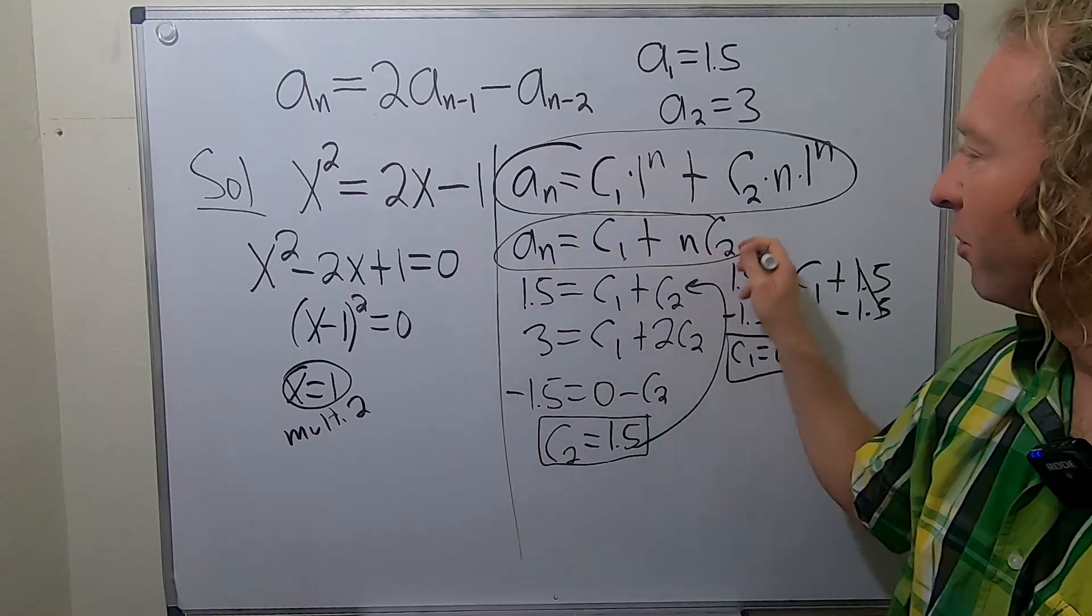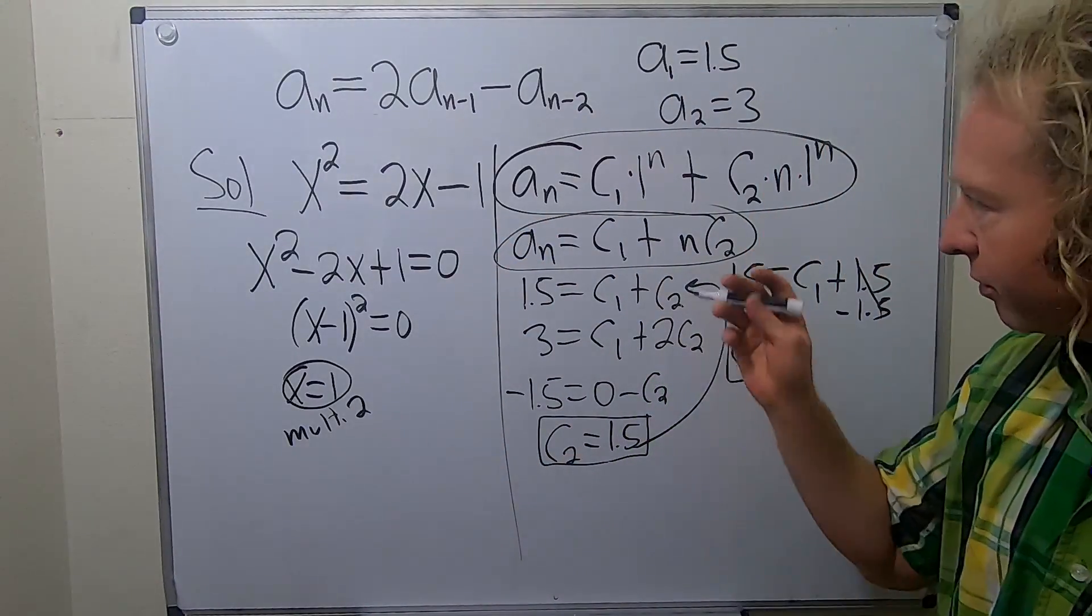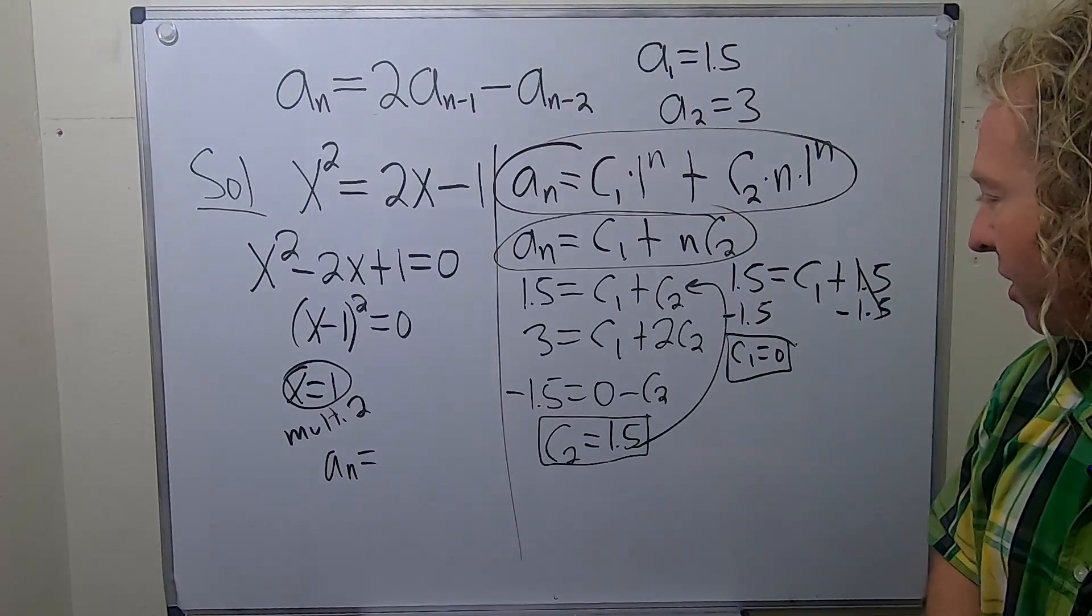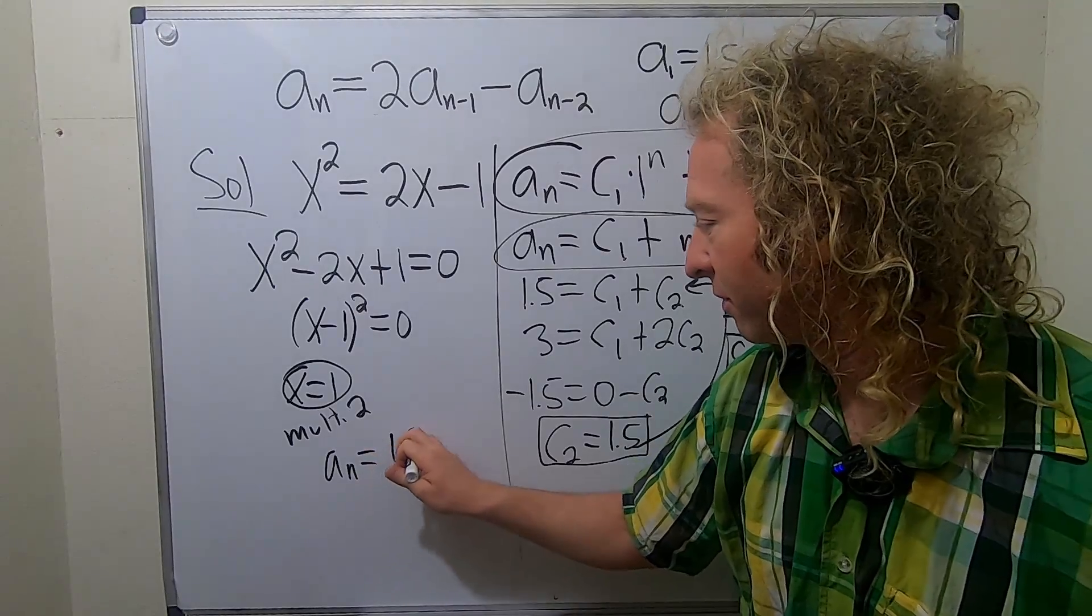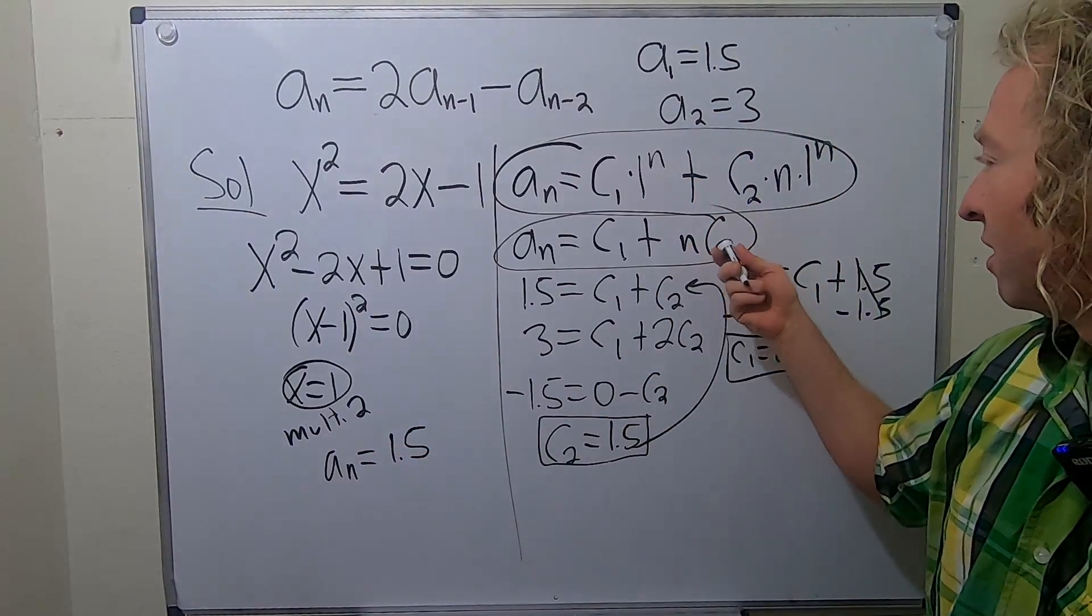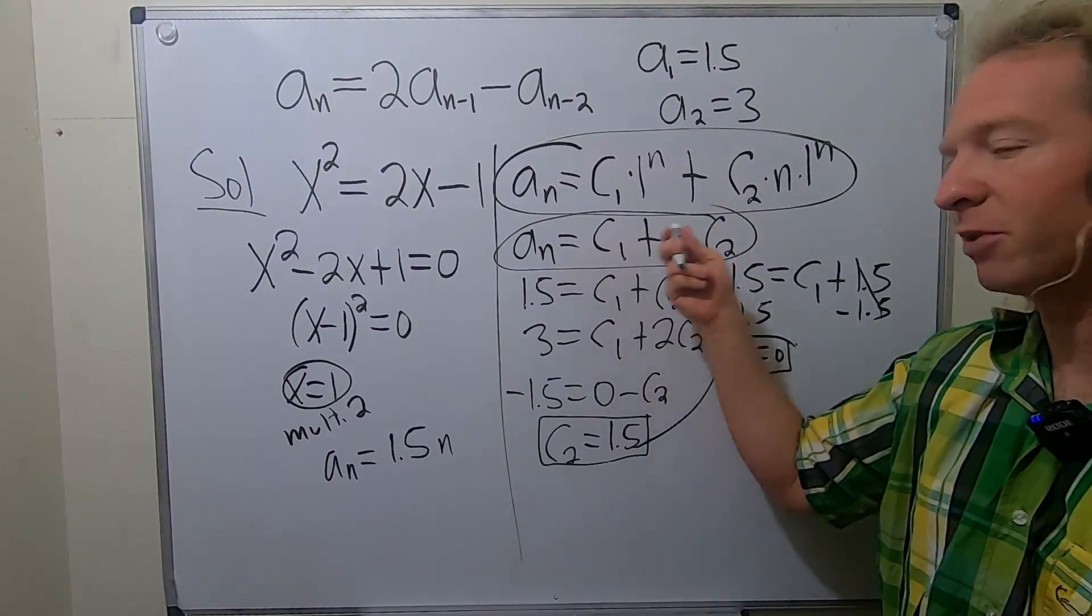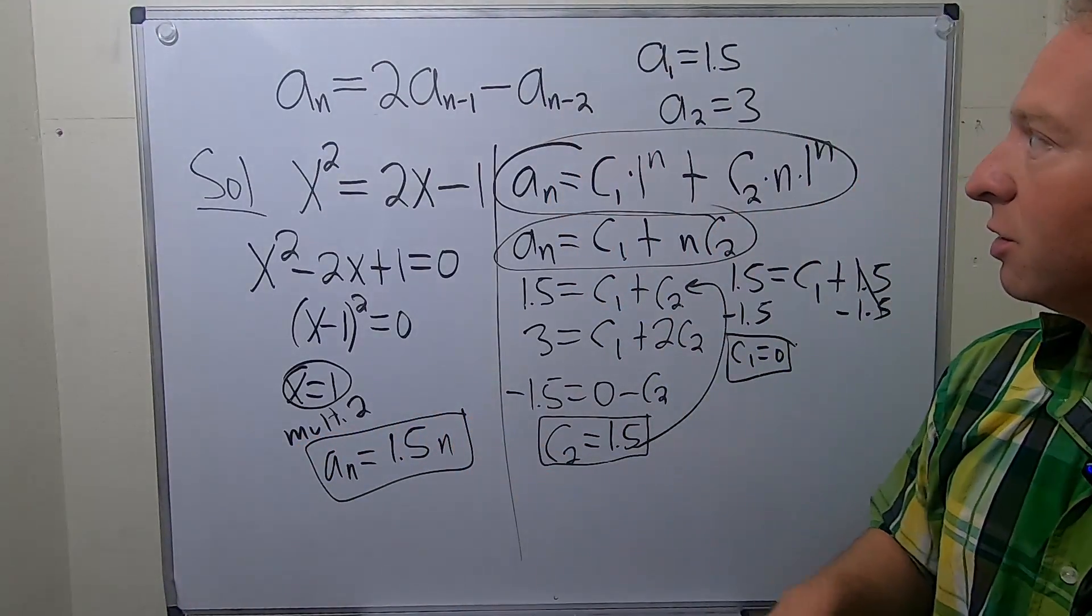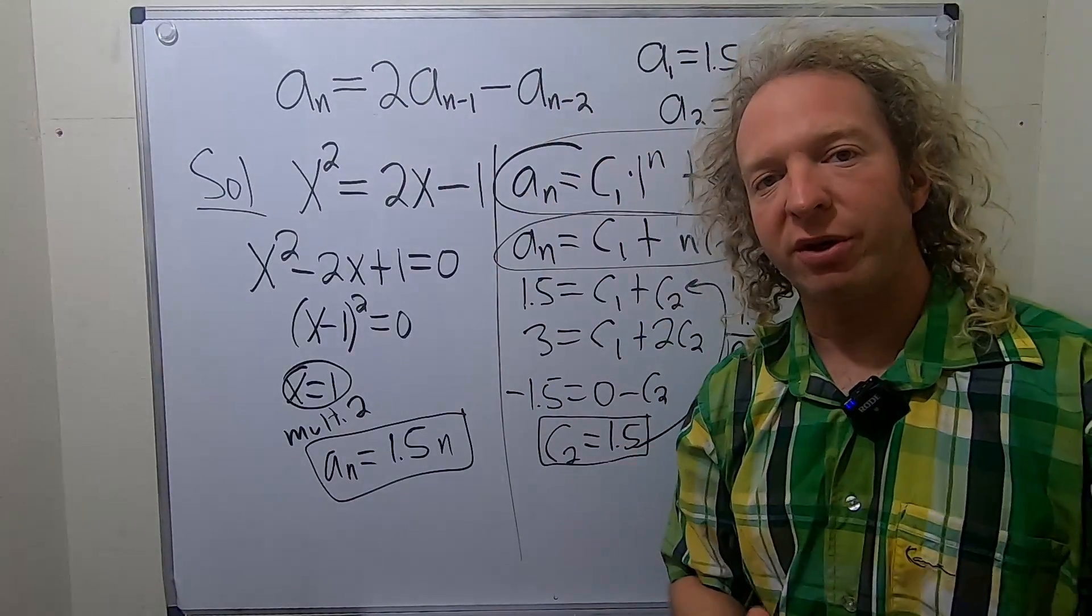So we end up with 1.5 equals c1 plus... Oh, look at this. They cancel, right? You subtract the 1.5 from both sides, and something beautiful happens. We get c1 equals 0. So we have c1 equals 0, c2 equals 1.5. We simply take these answers and we plug them back into this equation here. And we're done. Actually, let's plug them back in here, right? Because the 1 to the n, it's redundant, right? 1 to the n is 1. So the final answer would be a_n equals... Let's see. Our c1 is 0, c2 is 1.5. And just n, right? Just n. So 1.5n.